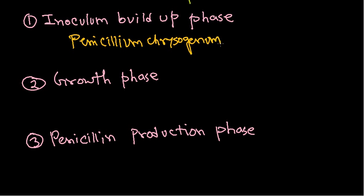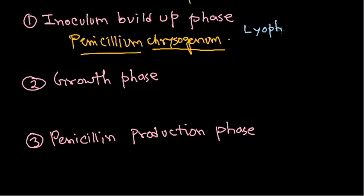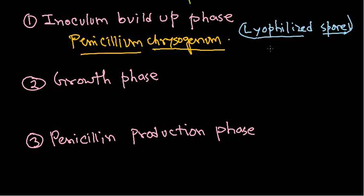Penicillium chrysogenum is taken as the starter culture. This culture is usually preserved as lyophilized spores. We take these lyophilized spores and put them into the medium required for the spores to transition into vegetative cell growth, and mycelia start to form. When spores receive sugar and a nitrogen source, they germinate and produce the vegetative body.